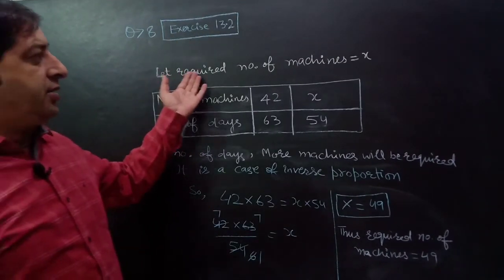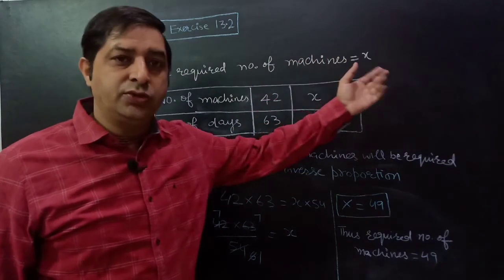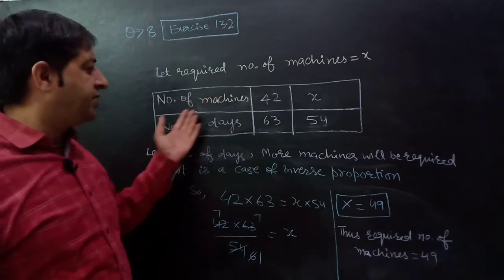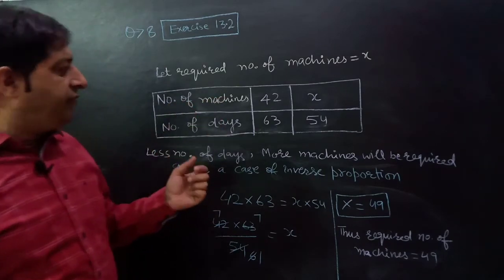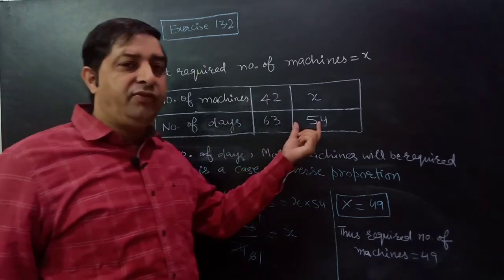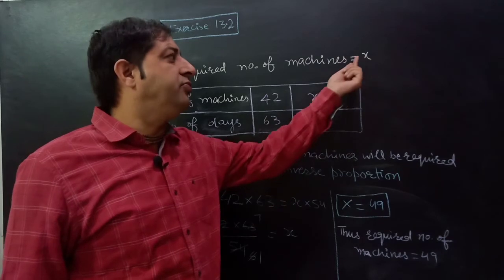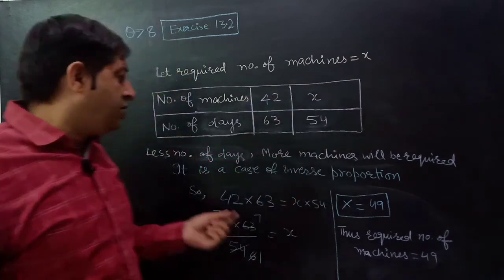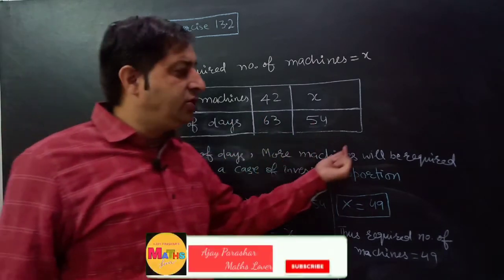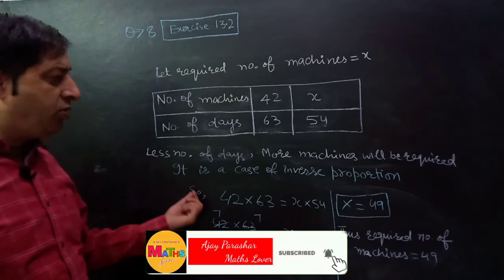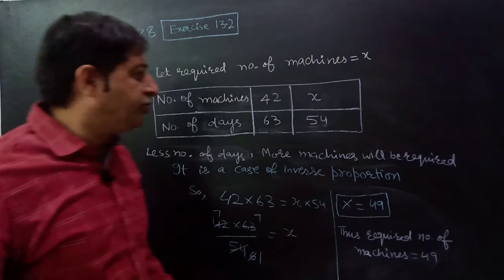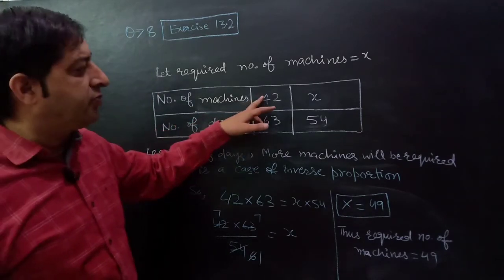Here we assume that the required number of machines is equals to x. The two quantities interlinked here are number of machines and number of days. If there are 42 machines, they take 63 days. Now we have to complete the work in 54 days, so we assume the number of machines is x. Less number of days means more machines will be required. One quantity is decreasing and the other is increasing. So it is a case of inverse proportion, and their product remains same.